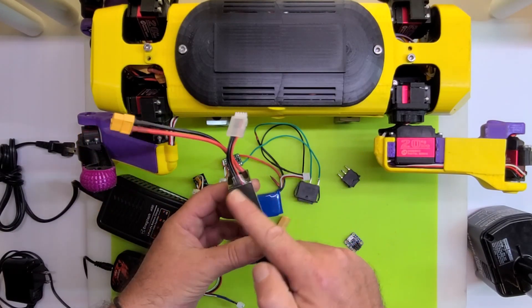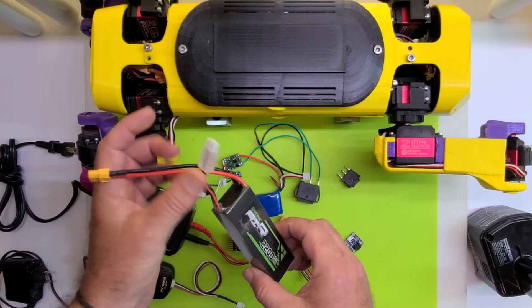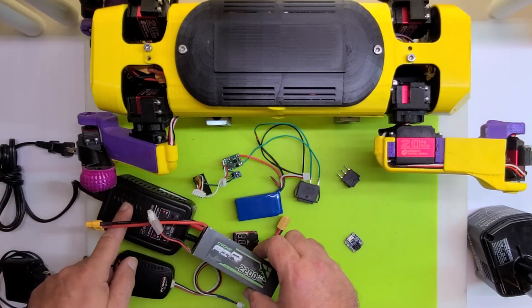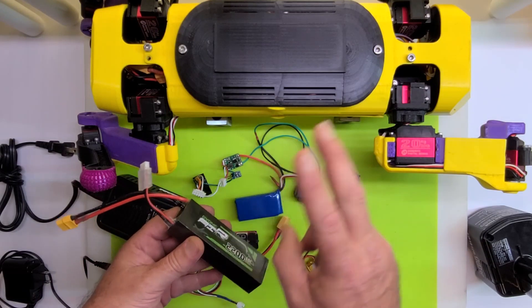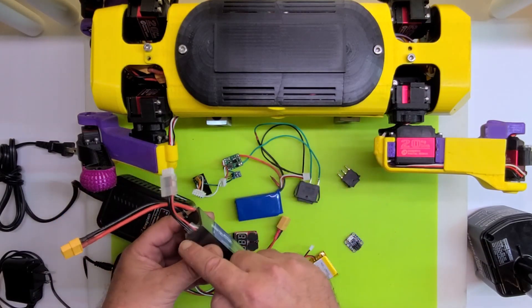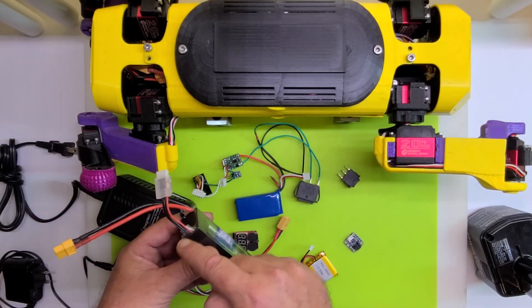So then the charger controls, I don't think trickle charge is the word, but it controls and balances the charging of those three cells to keep them even.